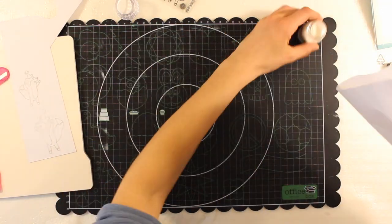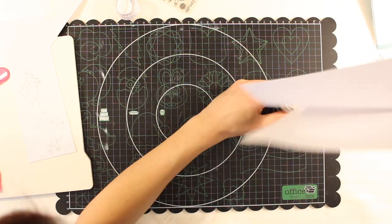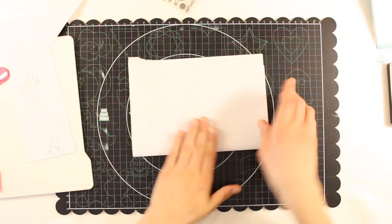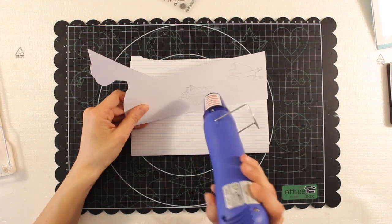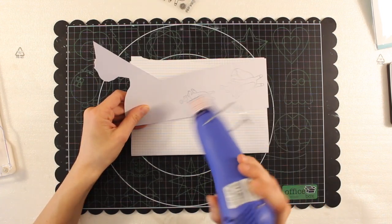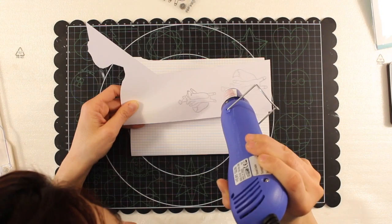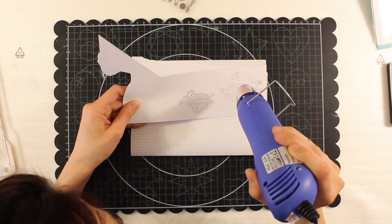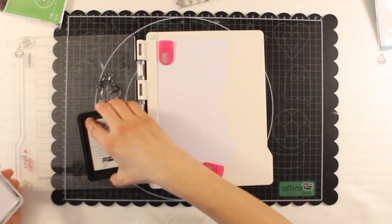Now I cover the images in clear embossing powder and I'm going over it with my heat gun to melt the powder and emboss the image. I leave this aside and move on to the next one.